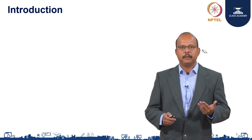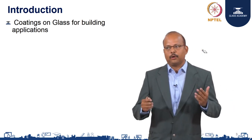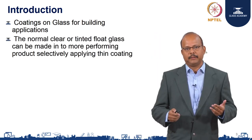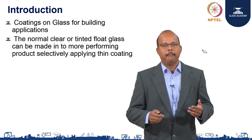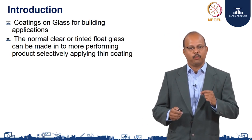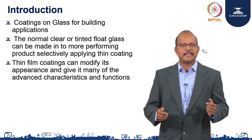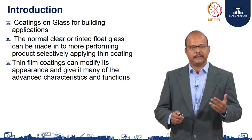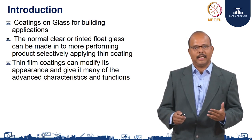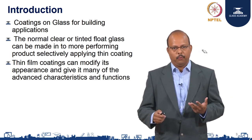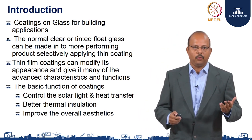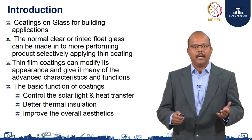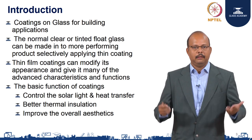Now let us understand specifically the coatings for exterior glazing applications for buildings. A normal clear tinted glass can be made more performing by adding selective thin film coatings on the glass. The thin film coatings can modify the appearance and give it advanced characteristics and functions. The basic functions that can be added could be solar control, control of light and heat transfer, better thermal insulation, and improved overall aesthetics of the building.